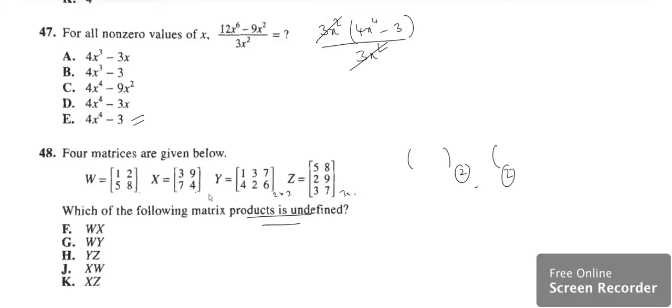Only thing is X and Z. If you take, this is 2 rows 2 columns, so columns are 2 and the first is 3, so it means X and Z is not possible. That is option K.